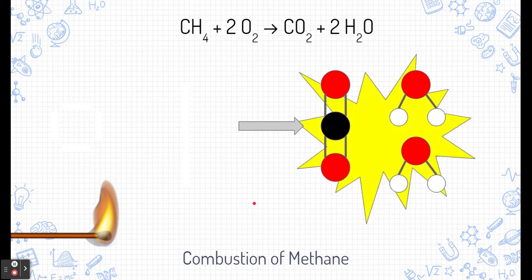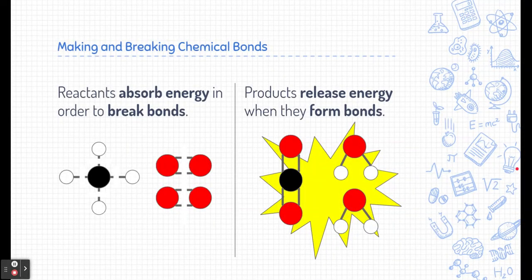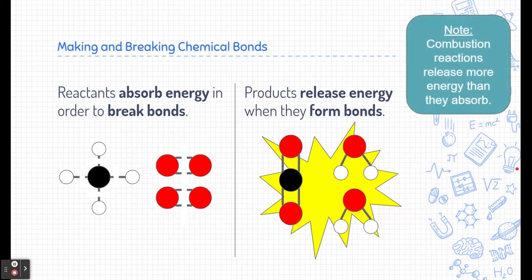Now, combustion reactions also release tons of energy in the process. From this reaction, we learn a lot about making and breaking chemical bonds. Typically in a chemical reaction, the reactants have to absorb energy in order to break those bonds. And when they rearrange themselves and form new bonds, lots of energy is released from that. Now for combustion reactions specifically, they release more energy than they absorb, but that's not true for all reactions.